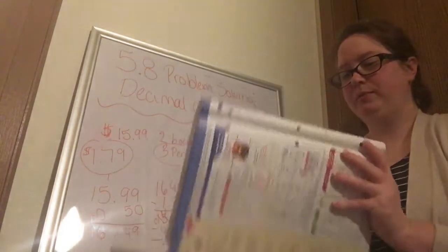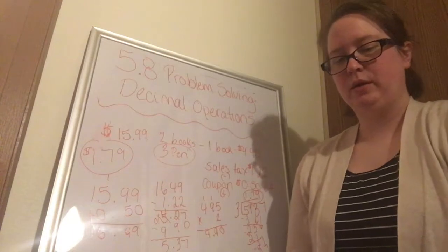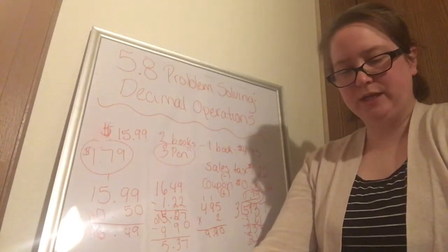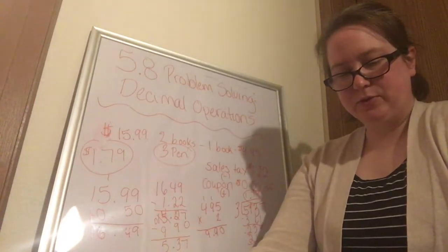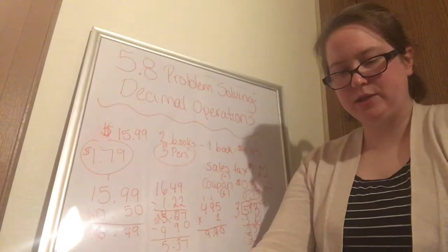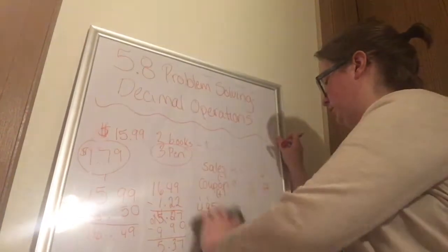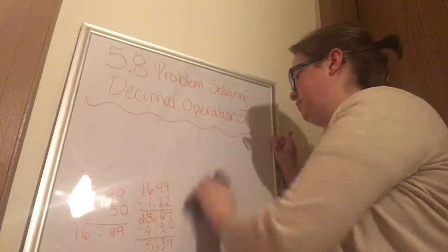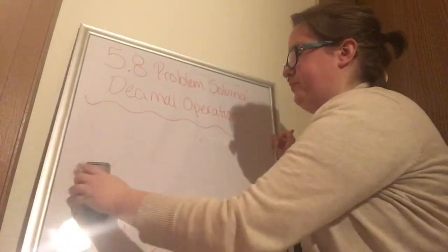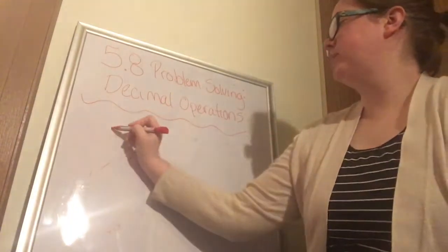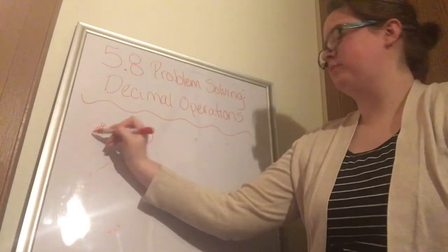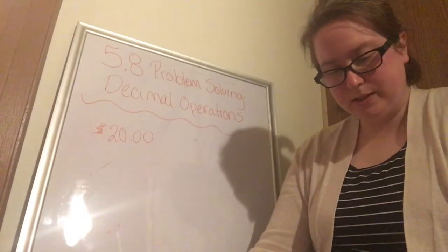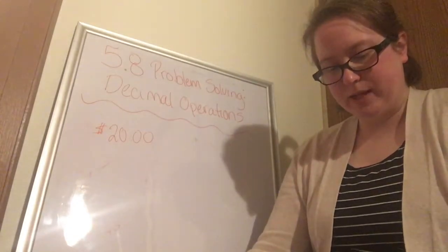Let's look at the next problem. Last week, Vivian spent a total of $20. She spent $9.95 for tickets to the school fair, $5.95 for food, and the rest for two rings that were on sale at the school fair. If each ring had the same cost, how much did each ring cost? So we start with the $20.